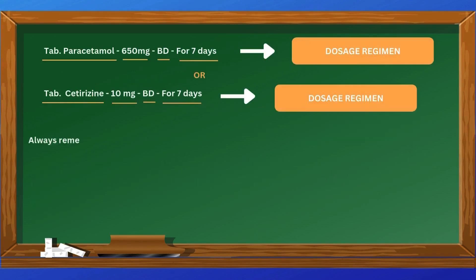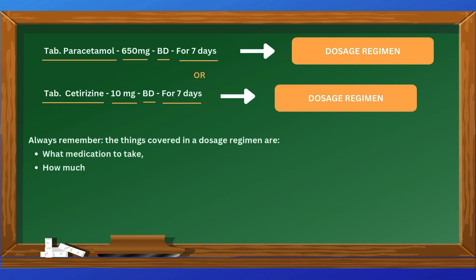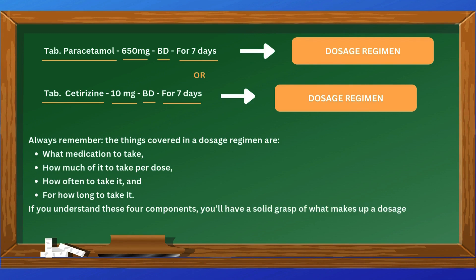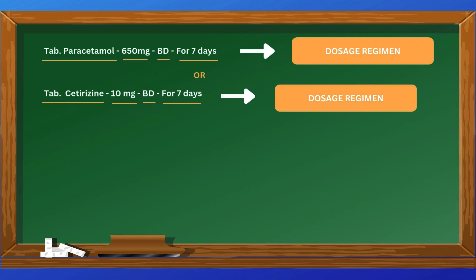To wrap up, always remember the four things covered in a dosage regimen: what medication to take, how much of it to take per dose, how often to take it, and for how long to take it. If you understand these four components, you have a solid grasp of what makes up a dosage regimen.